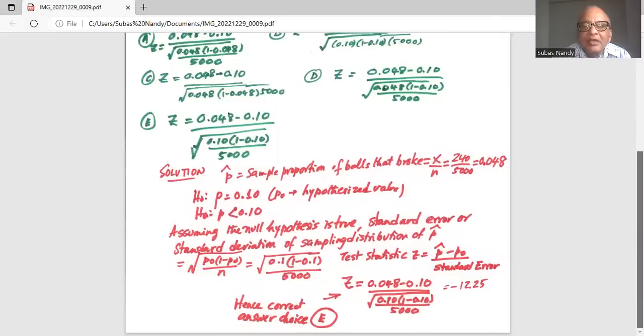And the test statistic will measure how far the sample proportion P hat is located away from the hypothesized population proportion P0 divided by the standard error. So P hat minus P0 divided by standard error.